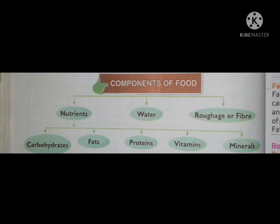Components of food. What are the components of food? Number 1: Nutrients. Number 2: Water. Number 3: Roughage or fiber. These 3 are the components of food. Nutrients include carbohydrates, fats, proteins, vitamins, and minerals.